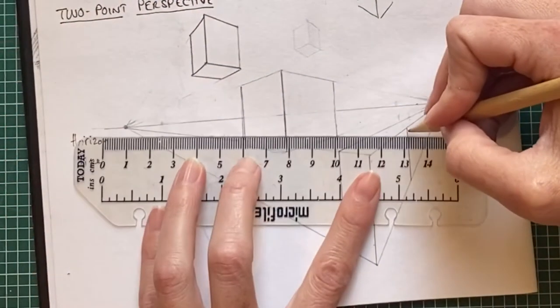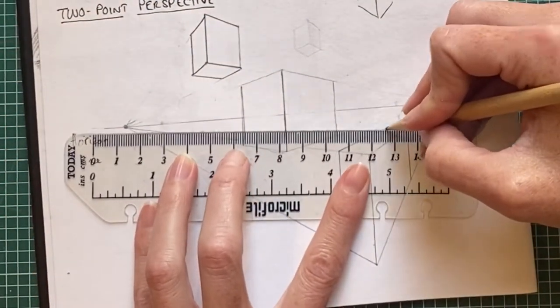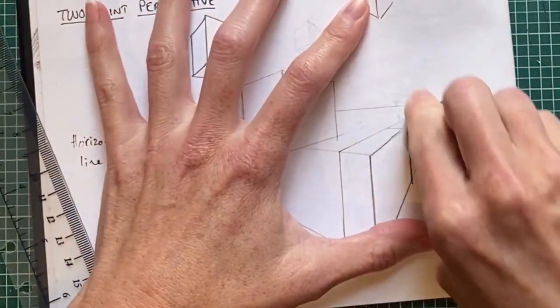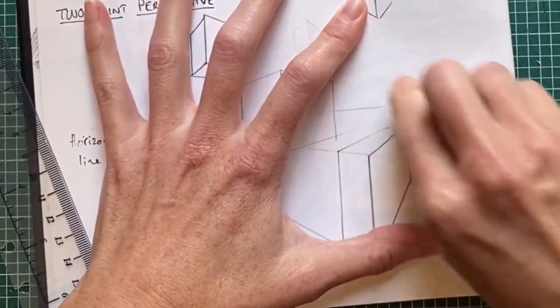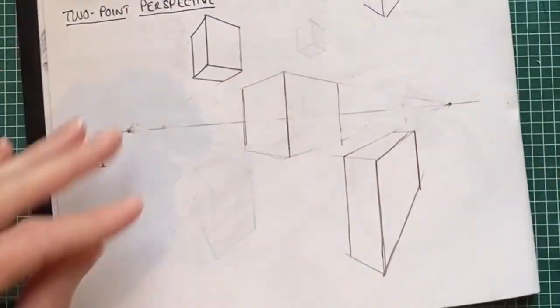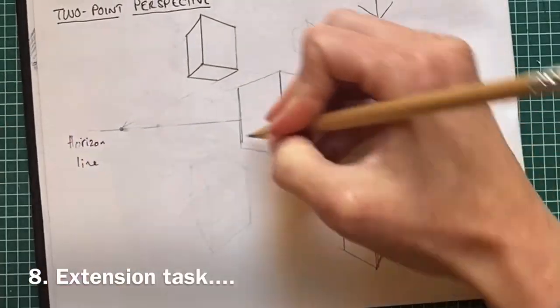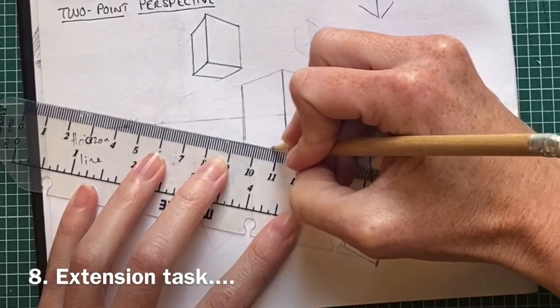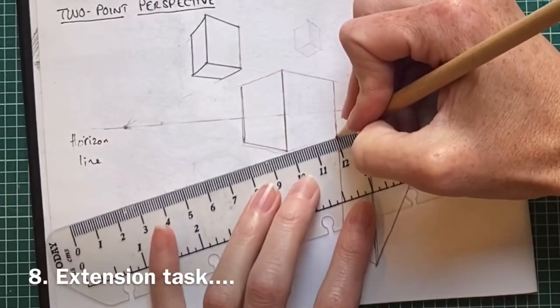There we go. Let's rub out the guidelines. You see, I've got my three two-point perspective boxes.